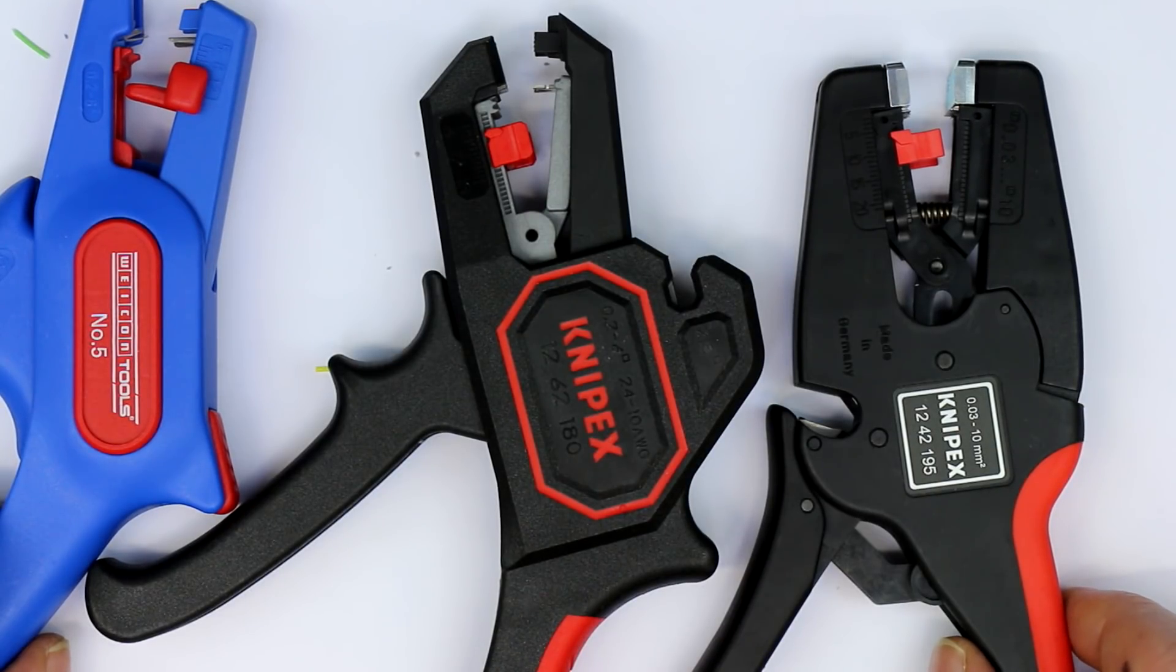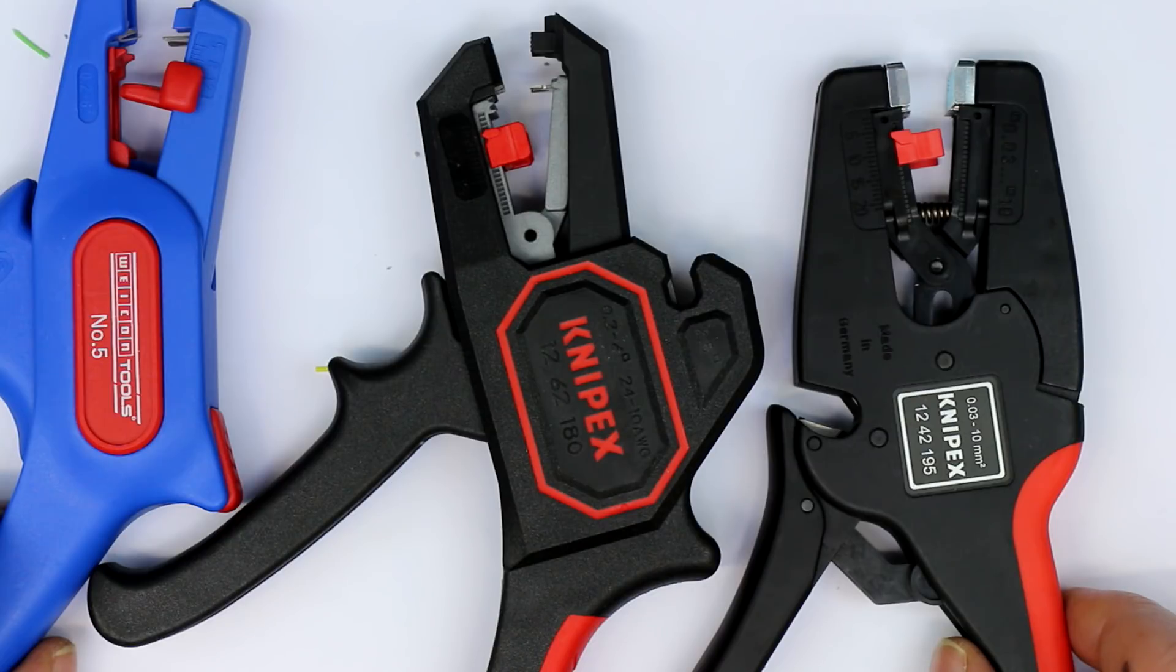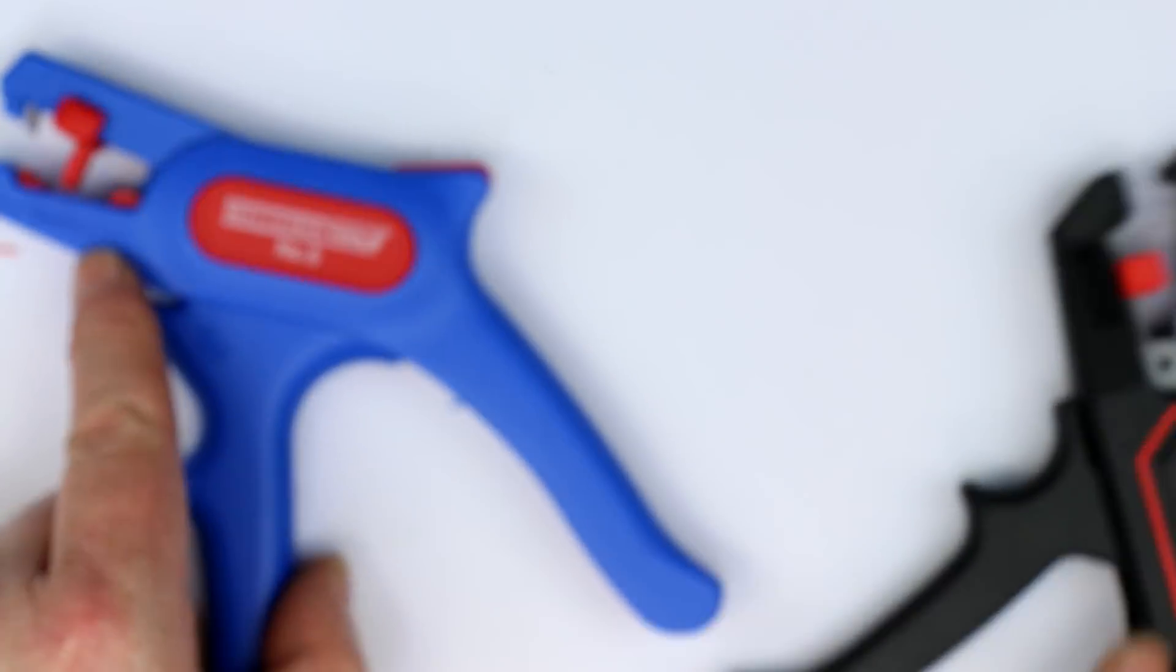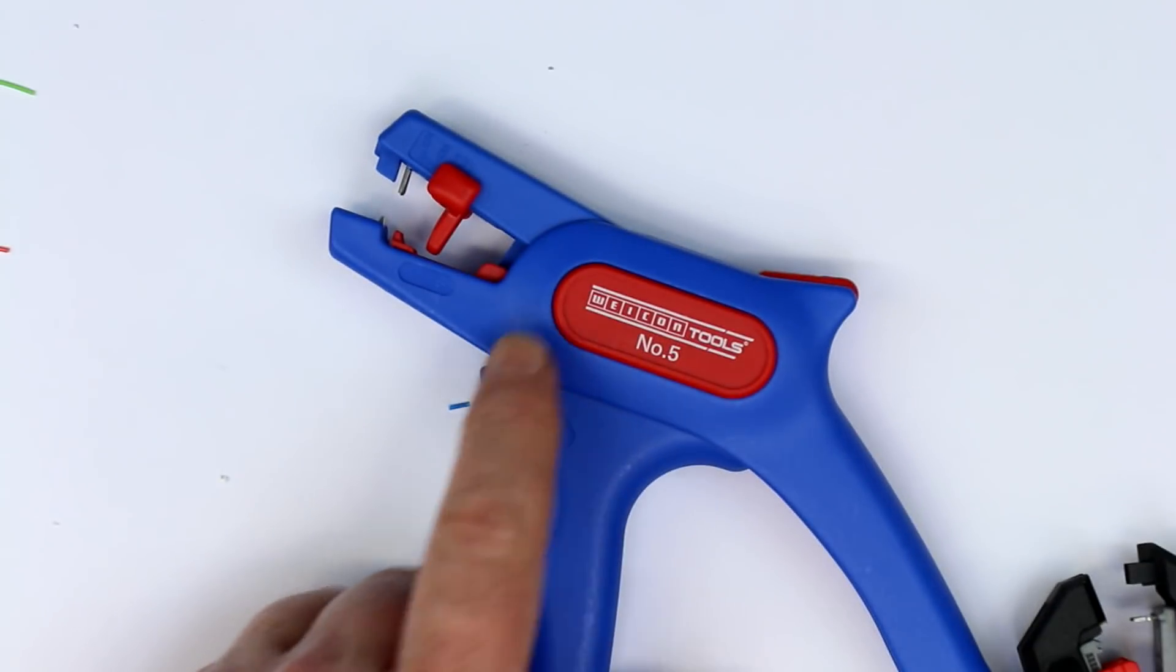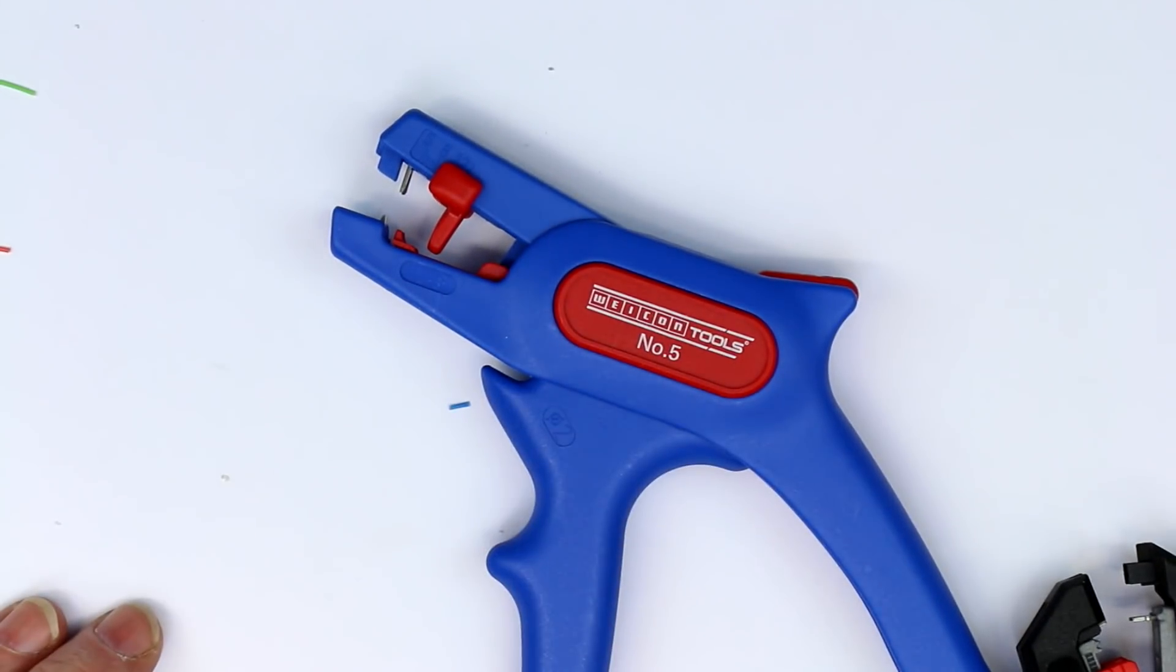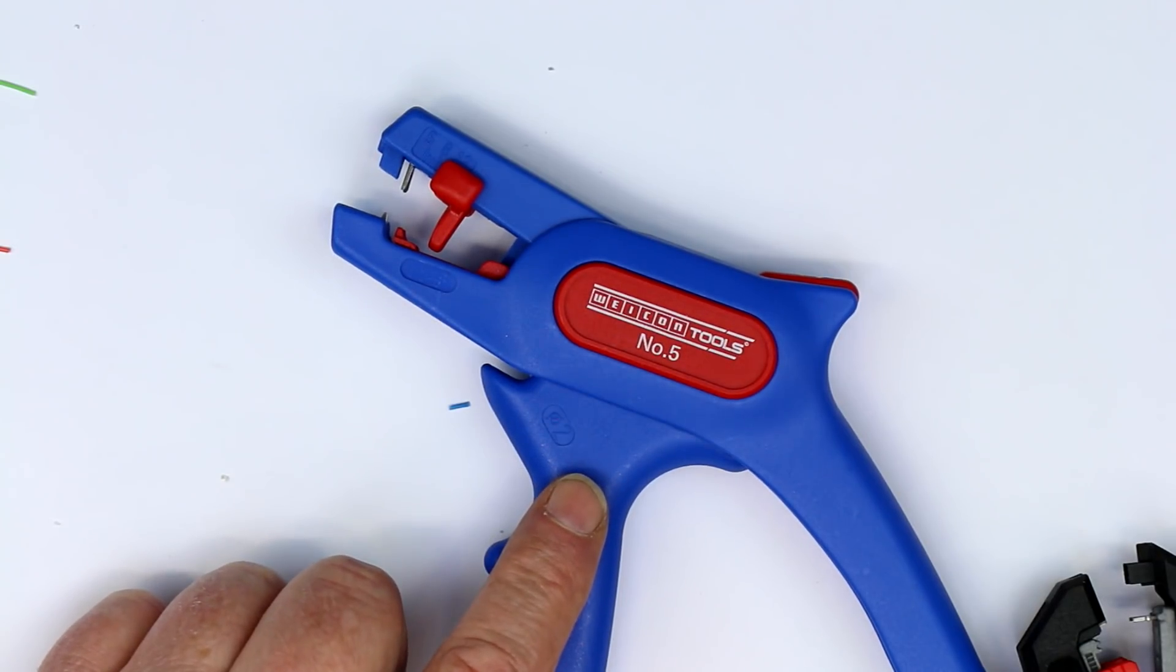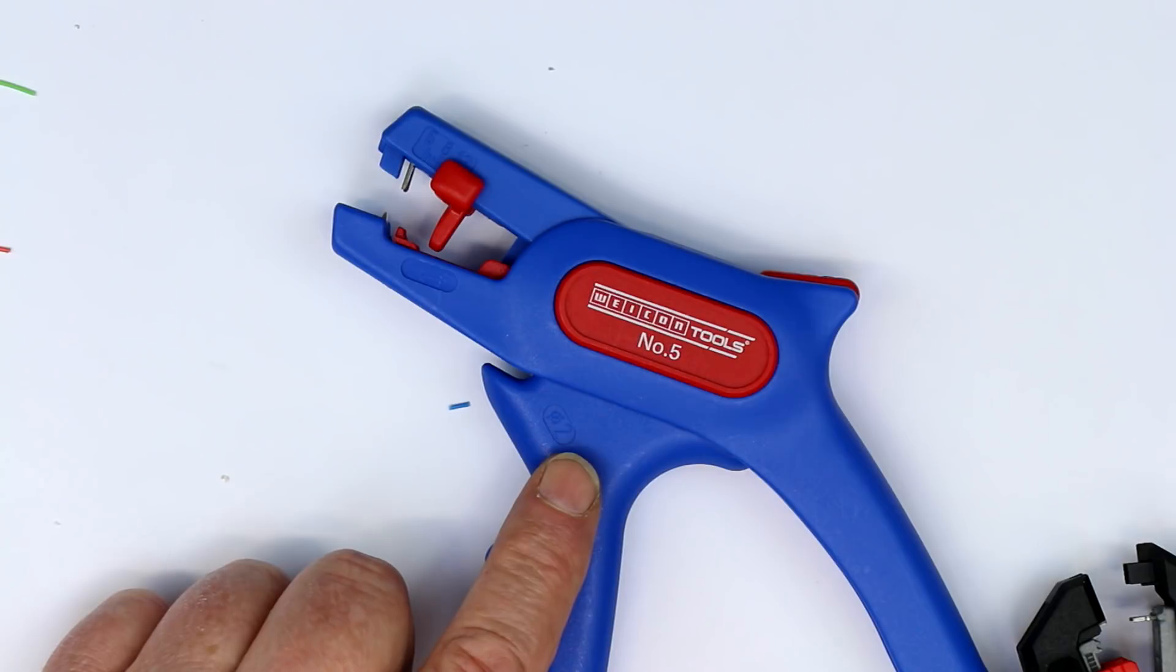So this time it's not 'you get what you pay for.' It's the other way around. The most ugly of the three and the cheapest is the best one. So we'll stay here with the Bicon number 5. And that was it with a little update with another stripping tool from Nipex.